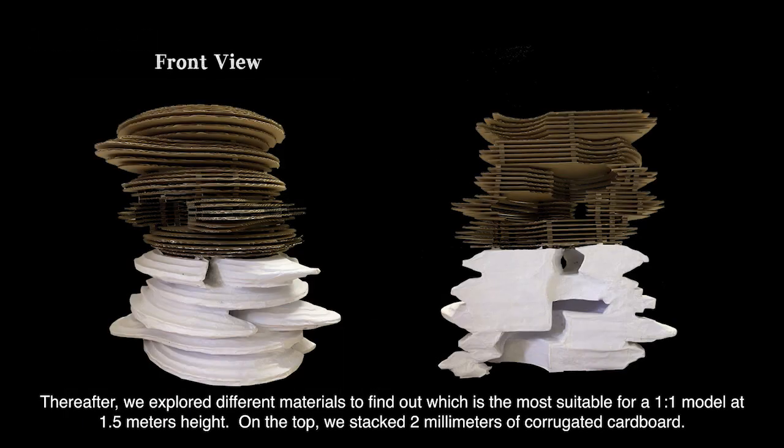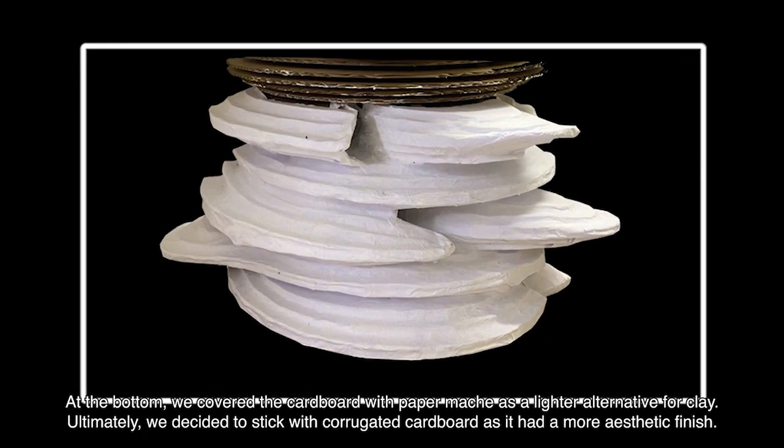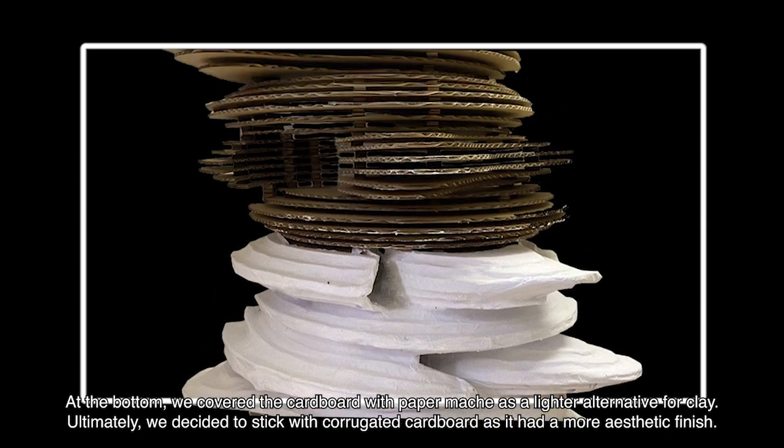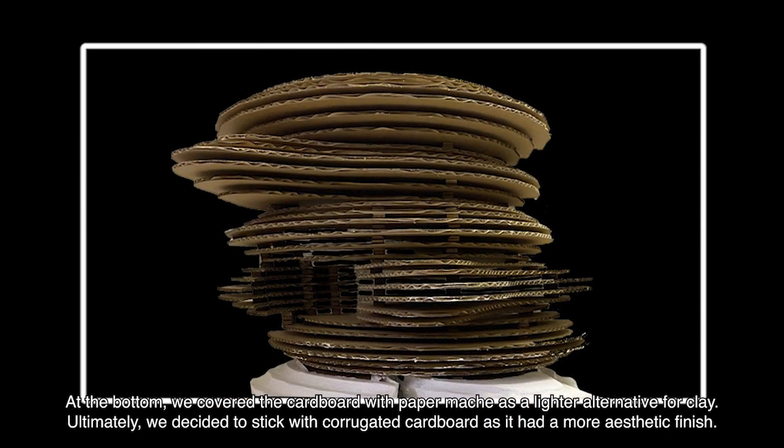Thereafter, we explored different materials to find out which is the most suitable for a one-to-one model at 1.5 meters height. On the top, we stacked 2 millimeters of corrugated cardboard. At the bottom, we covered the cardboard with paper mache as a lighter alternative for clay. Ultimately, we decided to stick with corrugated cardboard as it had a more aesthetic finish.